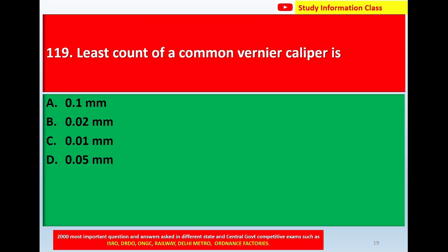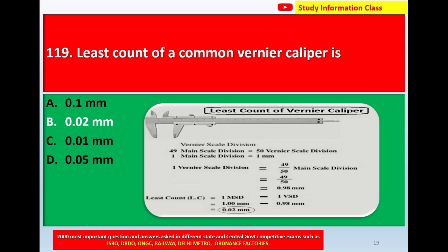Question number 119: the least count of a common vernier caliper is — Option A: 0.1 mm; Option B: 0.02 mm; Option C: 0.01 mm; Option D: 0.05 mm. This is the diagram of the least count of a vernier caliper. In 49 main scale divisions equal 50 vernier scale divisions.